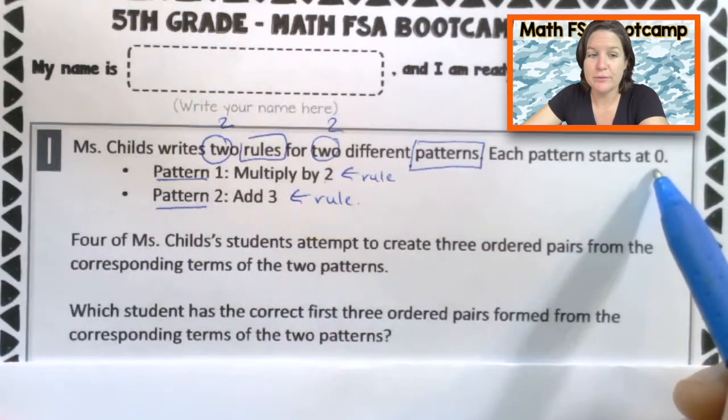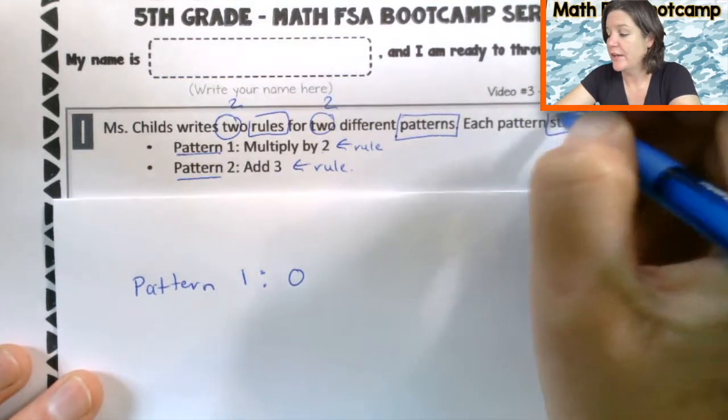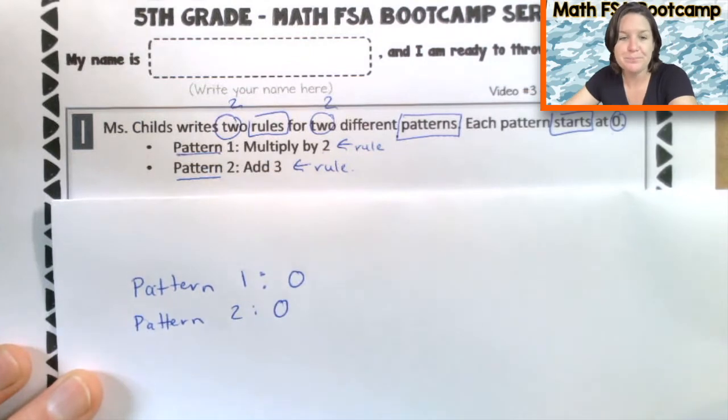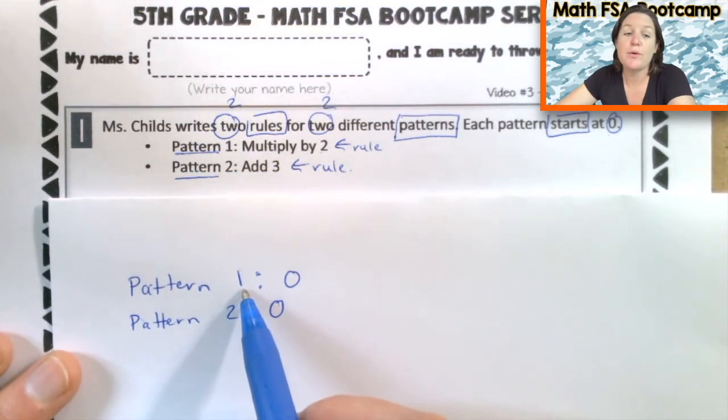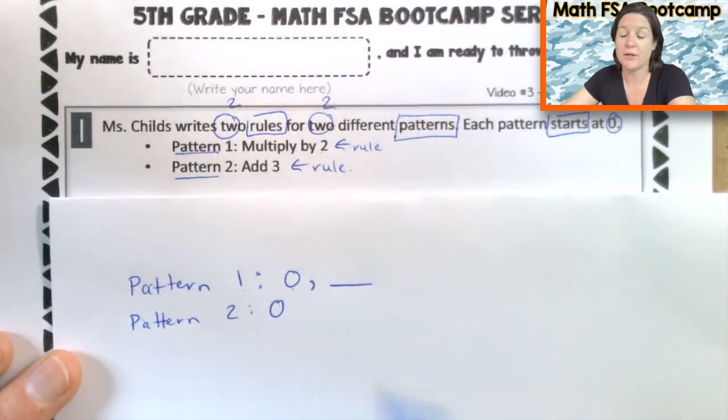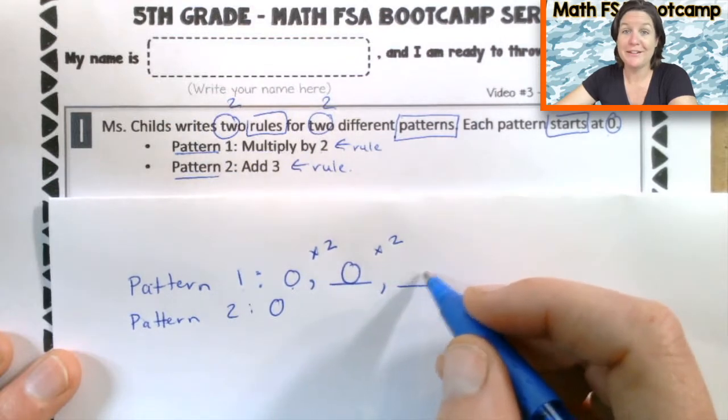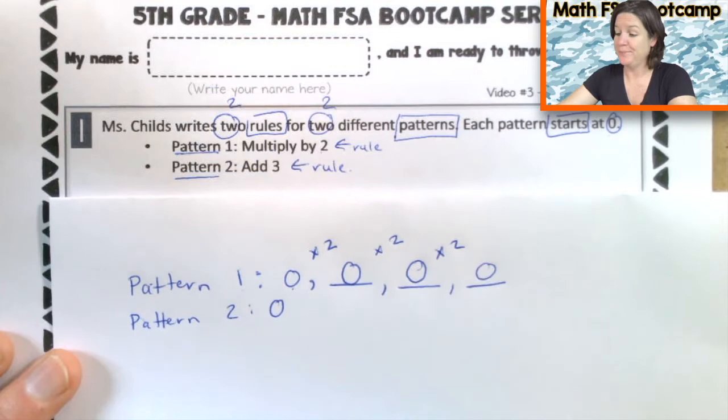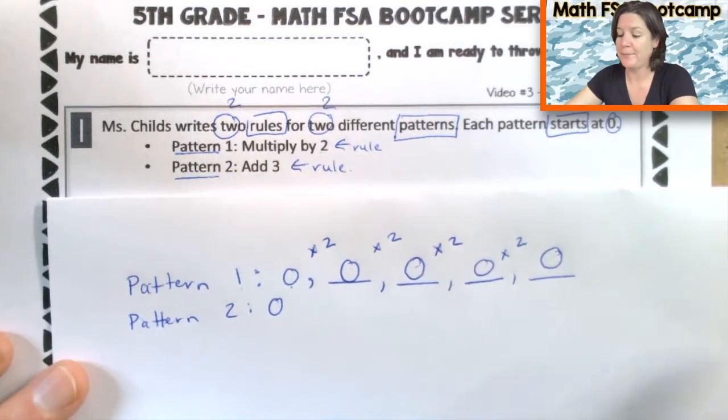Each pattern starts at zero. So for pattern one, we're going to start at zero. It says each pattern starts at zero. So pattern two, oh my gosh, I cannot spell pattern two. Also starts at zero. We've got those. The first pattern, the rule is to multiply by two. So pattern number one, if the rule is to multiply by two, what's the next number? Zero times two equals what? Zero. And the rule is still to multiply by two. What's the next number in the pattern then? Zero. And if we keep going, zero times two is zero. And then let's do one more for kicks and giggles. Zero times two is zero. Okay. That was pattern number one.